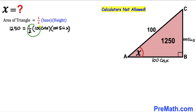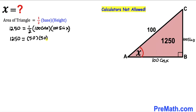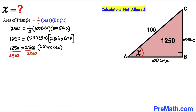Tweaking the right hand side: one half times 100 gives us 50, and the other 100 can be written as 50 times 2. So we can write 1250 equals 50 times 50 times 2 times sine of x times cosine of x. Dividing both sides by 2500, we get 2 times sine of x times cosine of x equals one half. Let's call this equation number 1.